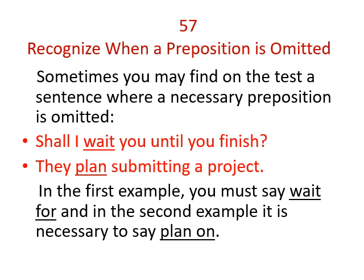Skill number 57: Recognize when a preposition is omitted. Sometimes you may find on the test a sentence where a necessary preposition is omitted. For example: 'Shall I wait you until you finish?' and 'They plan submitting a project.' Both are wrong because a preposition is missing. In the first example you must say 'wait for,' and in the second it is necessary to say 'plan on submitting a project.'